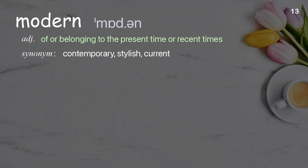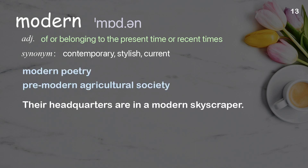Modern: of or belonging to the present time or recent times. Examples: modern poetry; pre-modern agricultural society. Their headquarters are in a modern skyscraper.